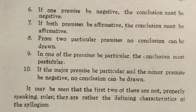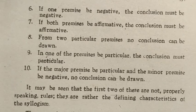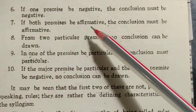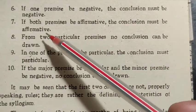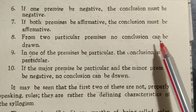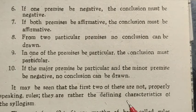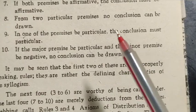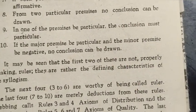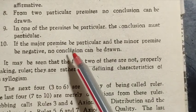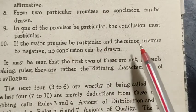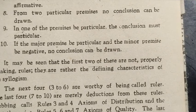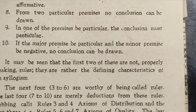Rule six: if one premise is negative, the conclusion must be negative. Rule seven: if both premises are affirmative, the conclusion must be affirmative. Rule eight: from two particular premises, no conclusion can be drawn. Rule nine: if one premise is particular, the conclusion must be particular. Rule ten: if the major premise is particular and the minor premise is negative, no conclusion can be drawn. These are all ten general syllogistic rules of syllogism. Thank you.